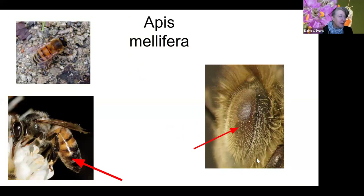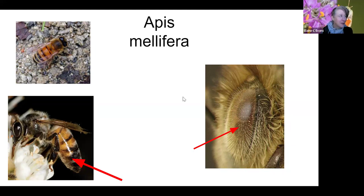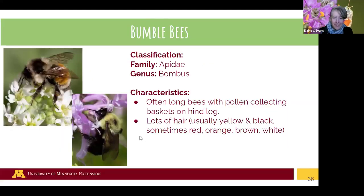A fun feature of honeybees is that they have hairs on their eyes — not all bees have this. So if you get a close-up look, you can actually see hairs growing right out of the eyes. Another big thing to look for is the pollen baskets on the hind legs.